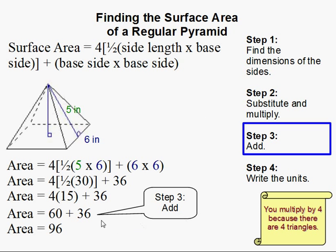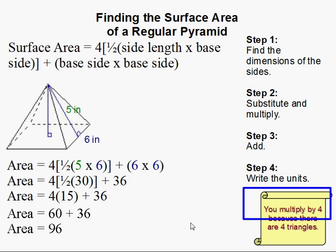So then you add up the stuff. Here we go. 60 plus 36 is 96.